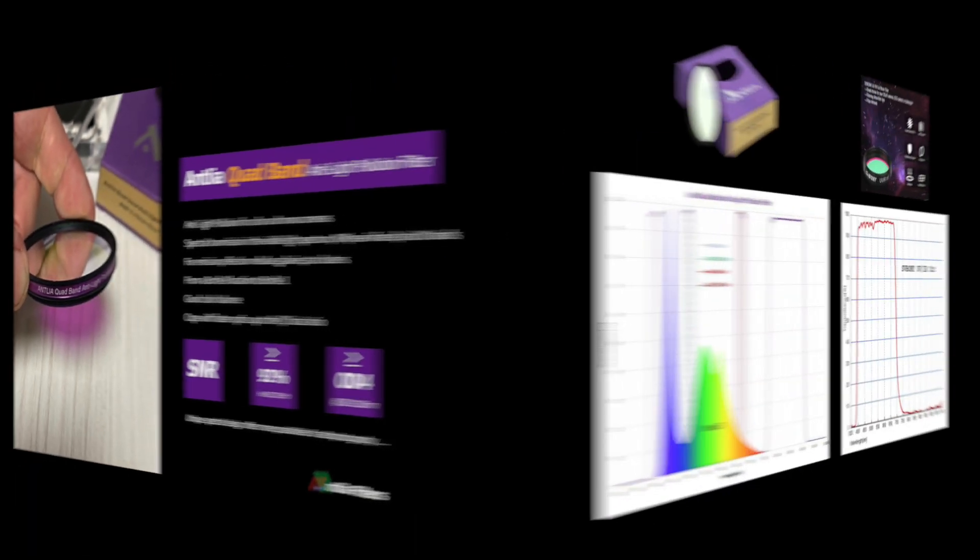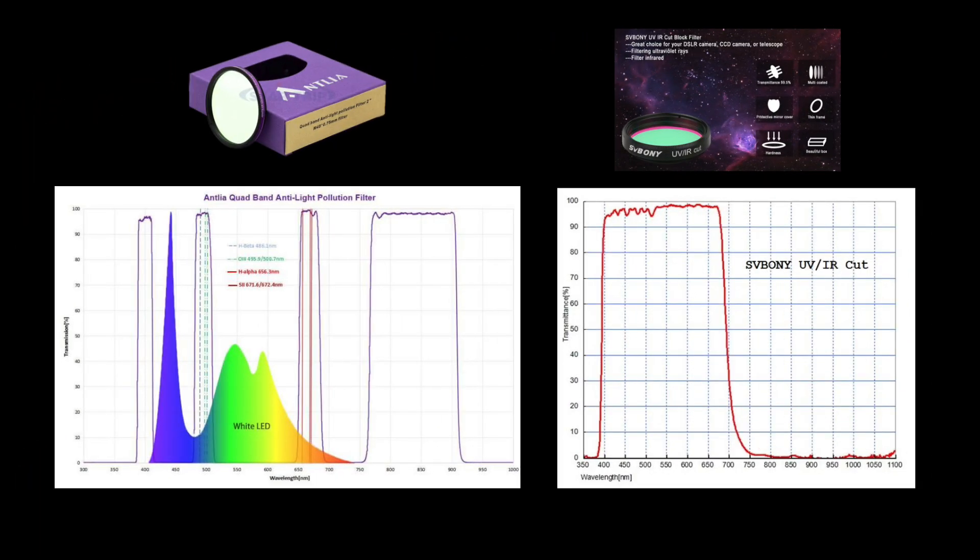The transmittance profile of these filters are shown here. They are quite different, but both are broadband filters. The quad band specifically is a bit unusual in that it is designed to block much of LED based city lights, but also to capture light out into the near-infrared.